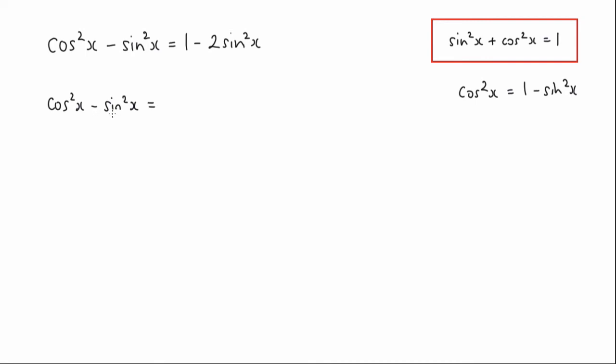So popping that in here, cos squared x is equal to 1 minus sine squared x. And then I've got another minus sine squared x here. And that simplifies to 1 minus 2 sine squared x.